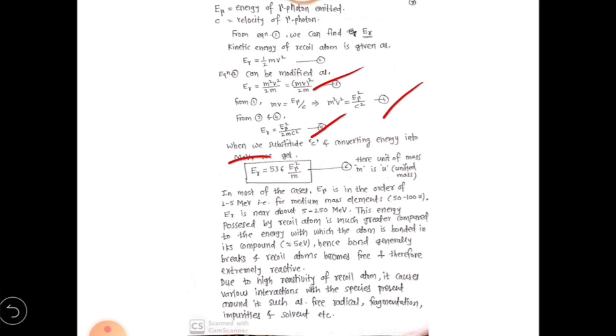If you put the value of c and convert the energy in million electron volts (MeV), we will get this equation: E_r = 536·E_gamma^2/m, which is given as equation number 6. Here, one important thing to note is that the mass m is in unified mass, that is atomic mass unit (amu).